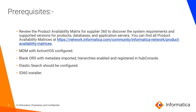The prerequisites are: we need to read the product availability matrix for Supplier 360 to discover the system requirements and the supported versions for products, database, and application servers. We should have MDM with ActiveOS configured, a blank ORS with metadata imported, hierarchies enabled and registered in the hub console. Elasticsearch should be configured and we should have S360 installers.